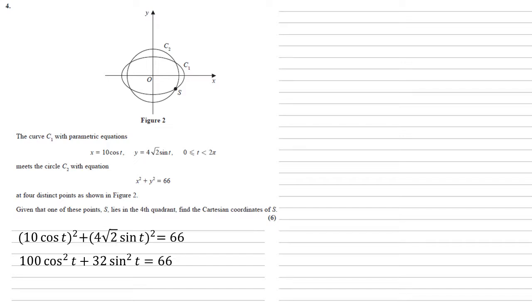There's a few ways to simplify this, but one way is to take 32 of the cos squareds and separate them from the other 68. So we've rearranged that left-hand side to get 68 cos squared t plus 32 lots of cos squared t plus sin squared t equals 66.